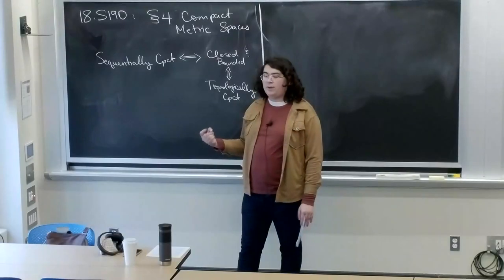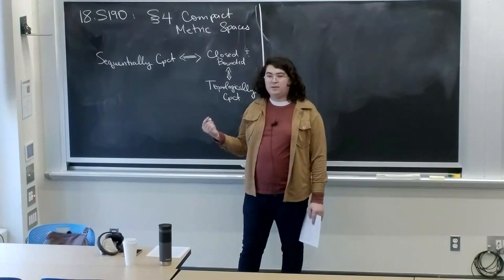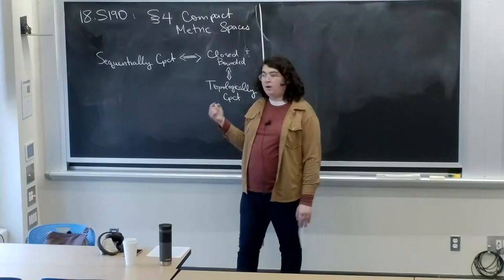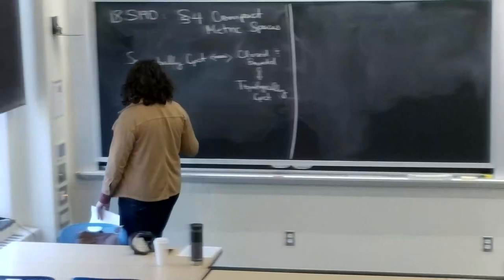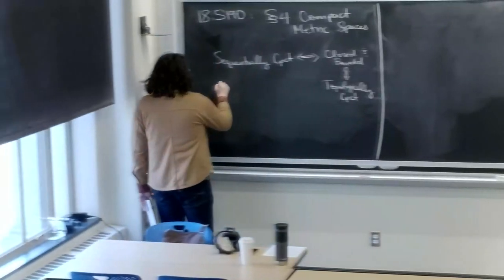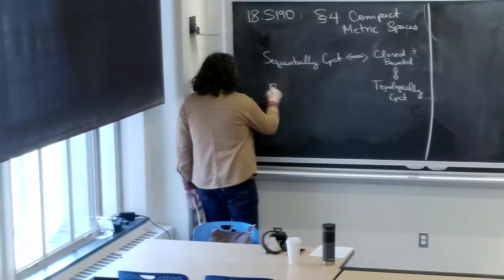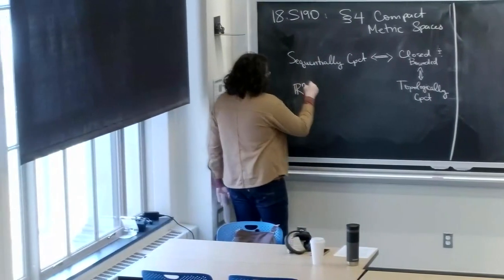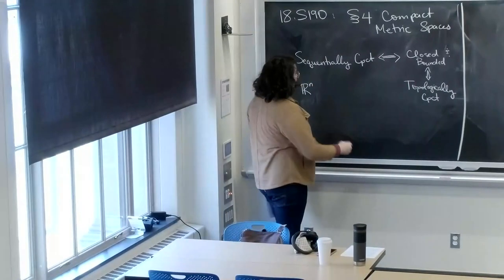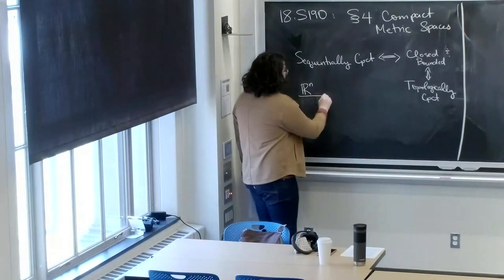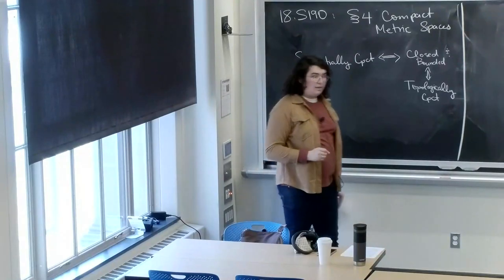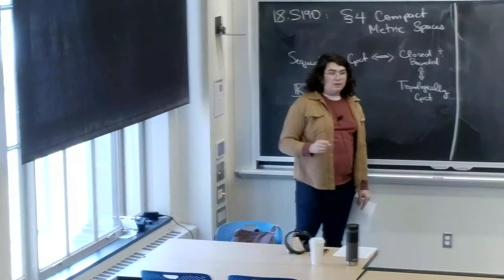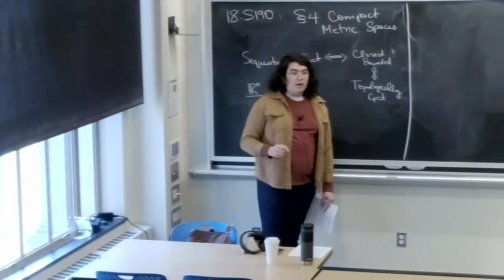Last time we started talking about metric spaces being compact on Euclidean space in particular, where we showed on Rn that sequentially compact was the same as closed and bounded, which was the same as topologically compact.